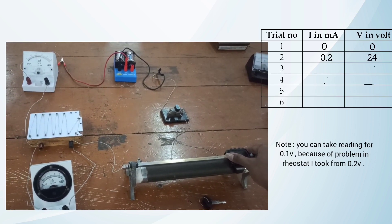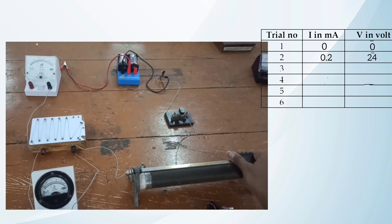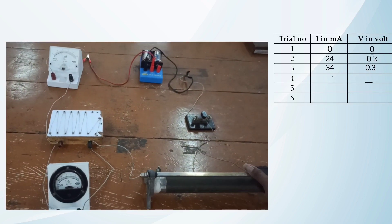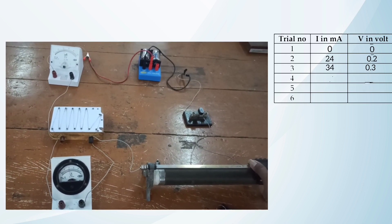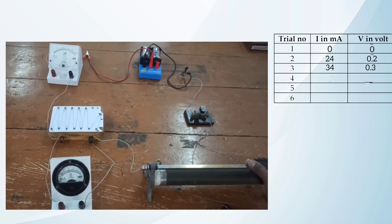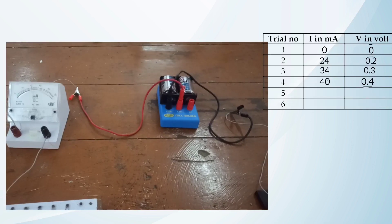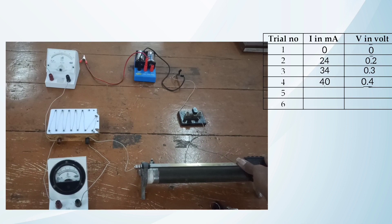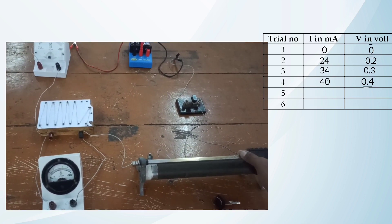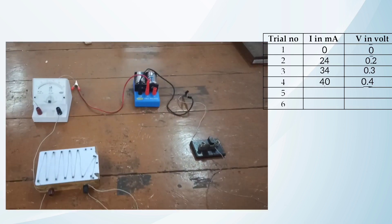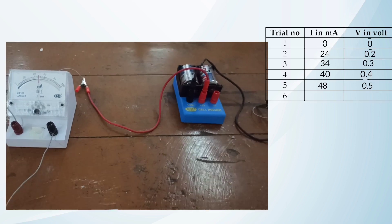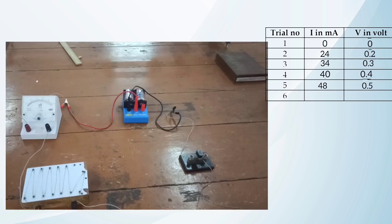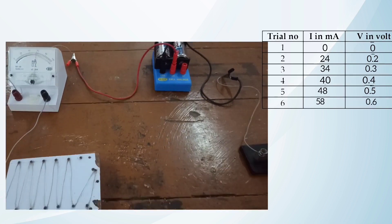Further changing to 0.3 volt, the milliammeter shows a reading of 34 milliampere. For 0.4 volt, we get a deflection at 40 milliampere. For 0.5 volt, the deflection is at 48 milliampere. For 0.6 volt, we get the deflection at exactly 58 milliampere.